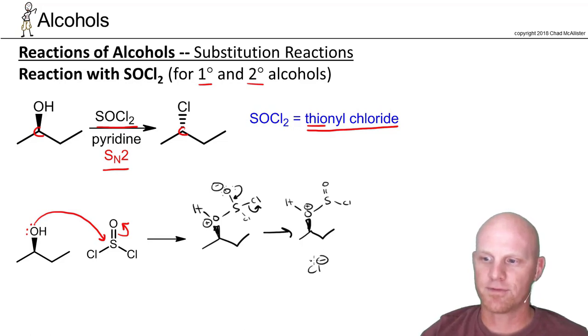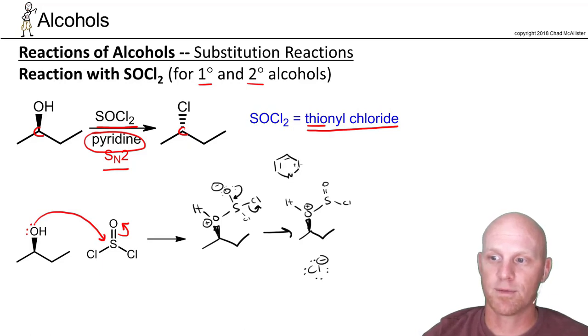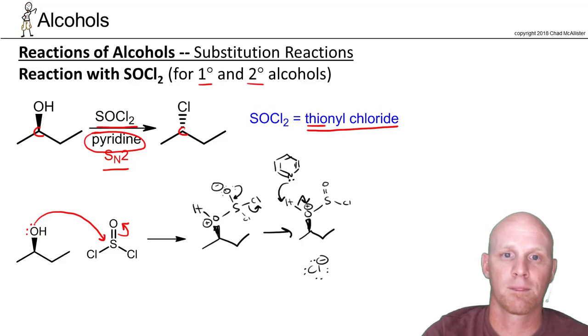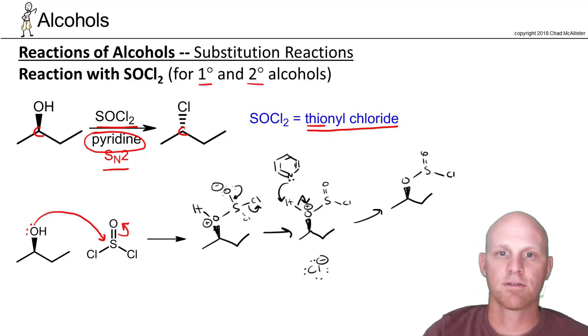But now we also have this chloride ion floating around that can do backside attack here in a little bit. And just like we saw in the last reaction, we're also using pyridine here. And so again, using it for the same purpose, it's just going to be a weak base here. And so pyridine is going to come in and deprotonate. So we're going to deprotonate there.